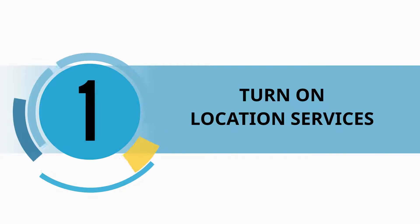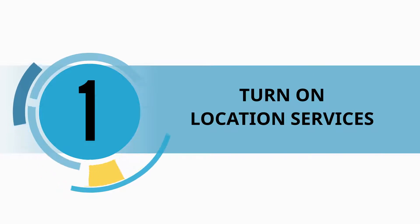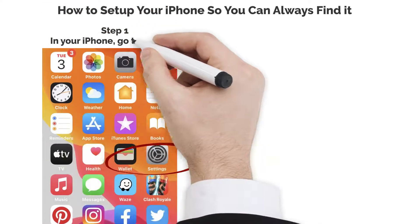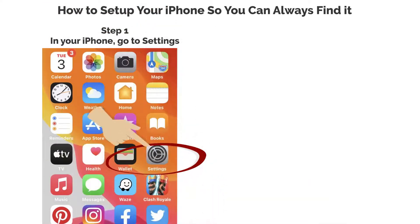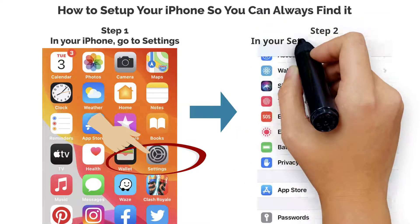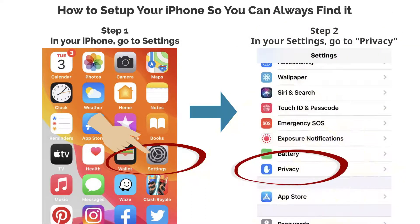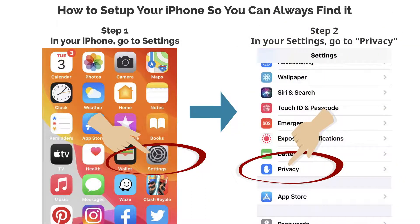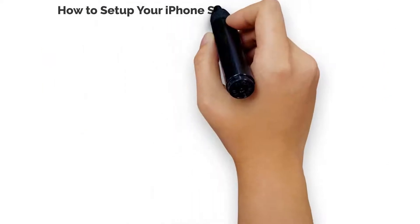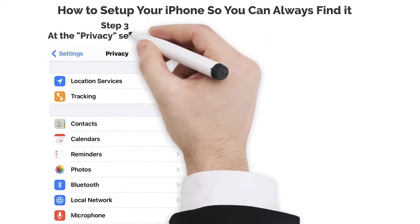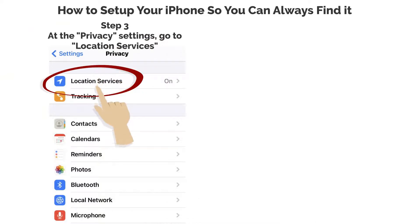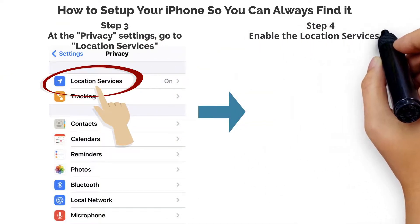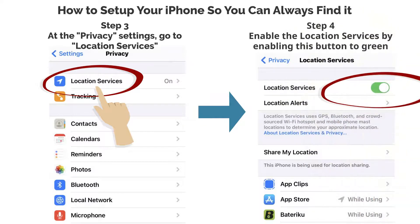Turn on Location Services. Step 1: In your iPhone, go to Settings. Step 2: In your Settings, go to Privacy. Step 3: At the Privacy settings, go to Location Services. Step 4: Enable Location Services by toggling this button to green.